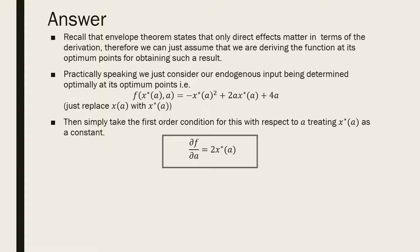Then, we simply take the first order condition of this with respect to a, treating x as a constant. This partial derivative, if we're appealing to envelope theorem, is just 2x*(a).